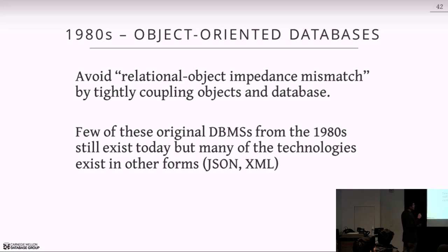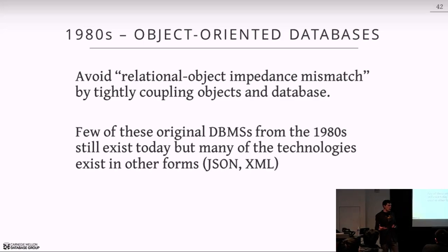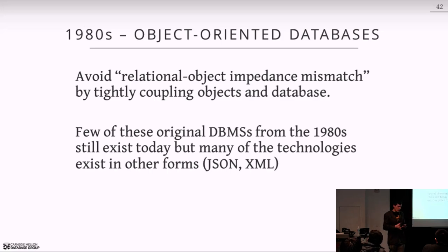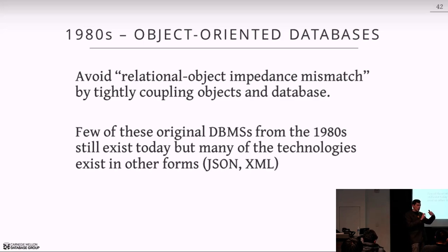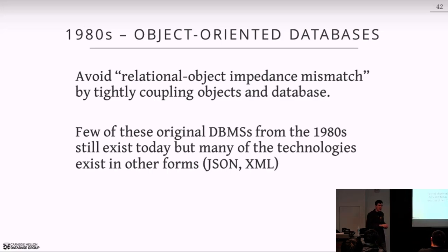In the late 1980s, a new movement came along — like the NoSQL guys of today — saying the relational model isn't what you want when writing object-oriented applications in C++. Inherently in C++ you're working with objects, and when you want to store them in a database you have to convert them from objects into relations, which is cumbersome and slow. They argued you're better off having a tight coupling between the database system and your programming language so you can write objects natively and store them natively in the database system.